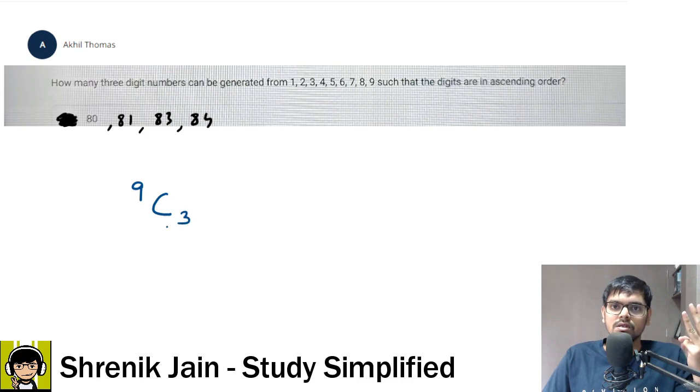So a lot of students will do out of nine select three means combination. So select three, now you got three numbers. You want to make three digit number, it's like having three numbers and having three places. So tell me the number of ways of arrangement, three factorial. So here permutation will come. Multiply with three factorial and this is what you are thinking your answer is.